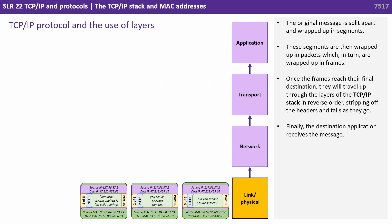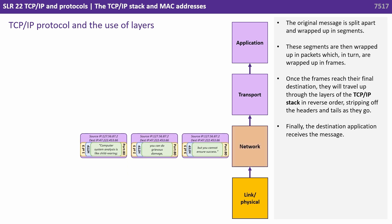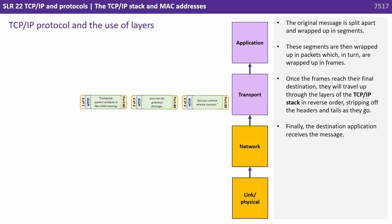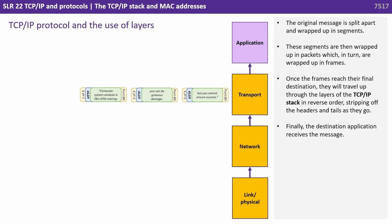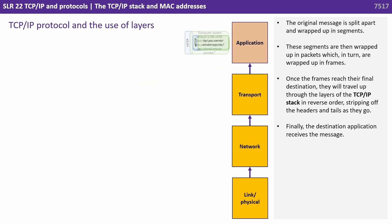The original message is split apart and wrapped up in segments. These segments are then wrapped up in packets, which in turn are wrapped up in frames. Once the frames reach their final destination, they travel up through the layers of the TCP/IP stack in reverse order, stripping off the headers and tails as they go. Finally, the destination application receives the message.